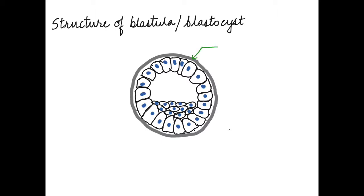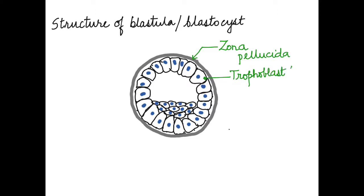Now the diagram is complete, let us label it. This layer that is seen outside is the zona pellucida. Next to that is the layer of cells which is called the trophoblast or the trophoectoderm. The trophoblast or the trophoectoderm helps in the formation of placenta.